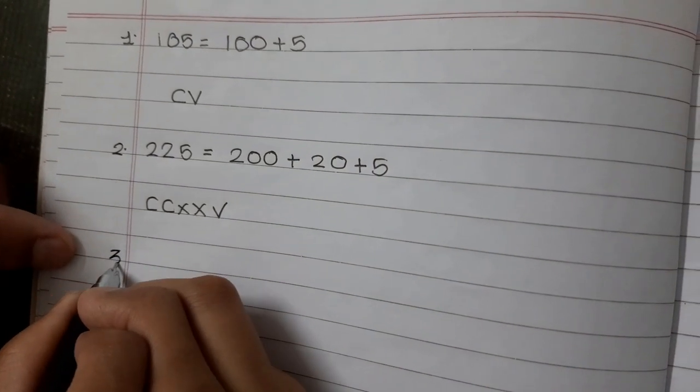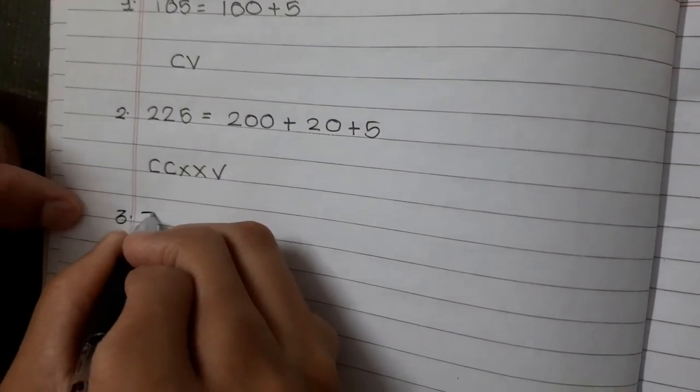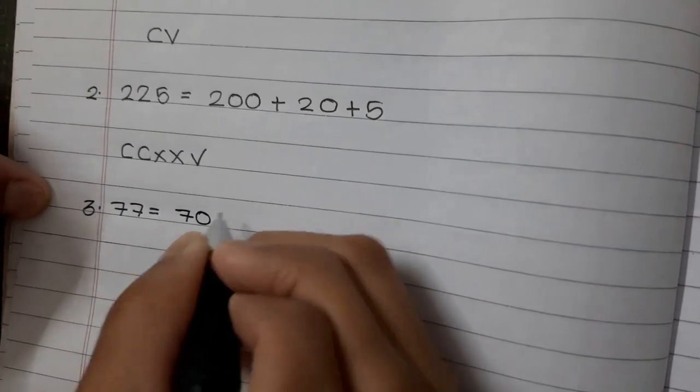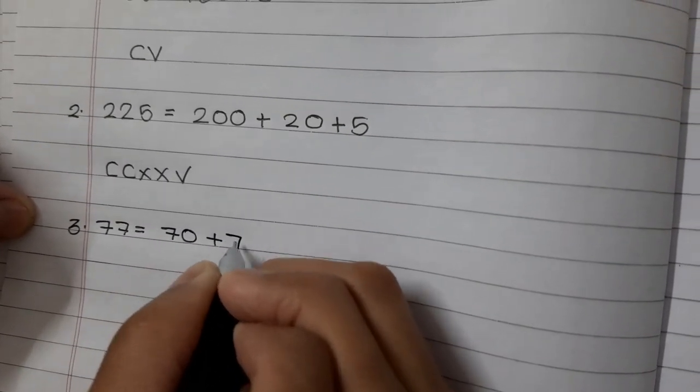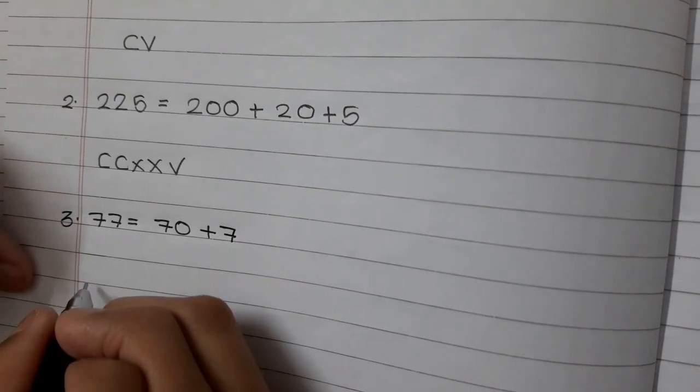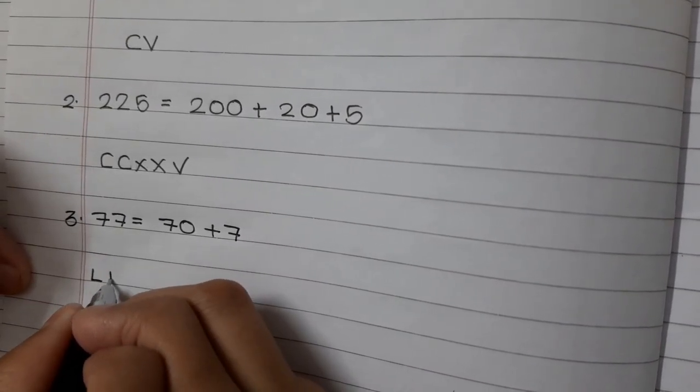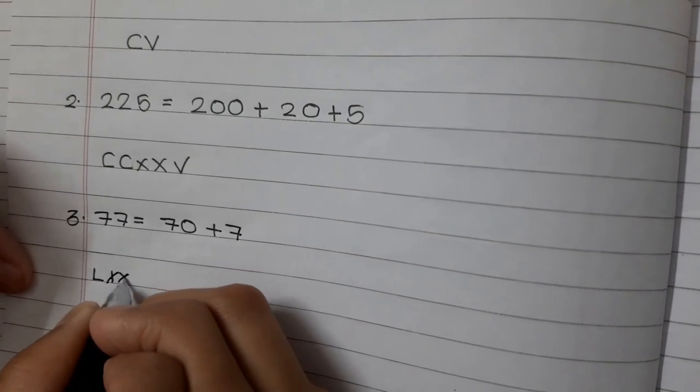We will take example number 3: 77. 77 equals 70 plus 7. 70 is L plus double X, and 7 is double I. So this is LXXVII.